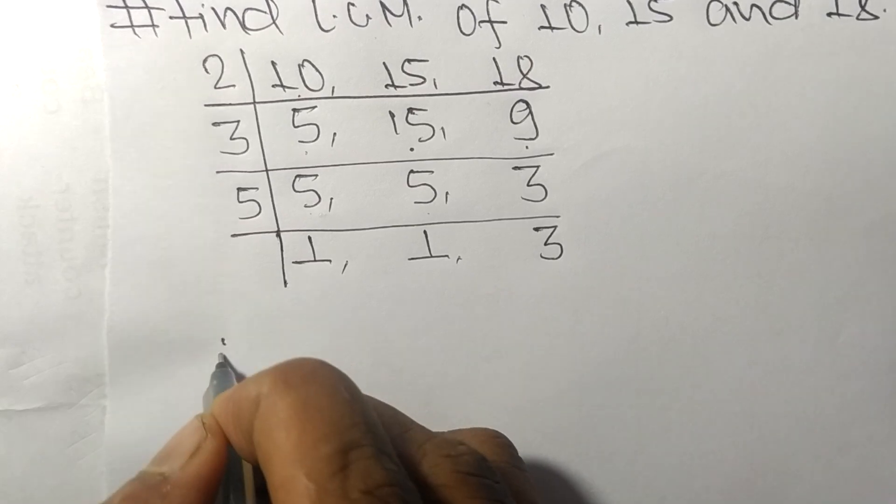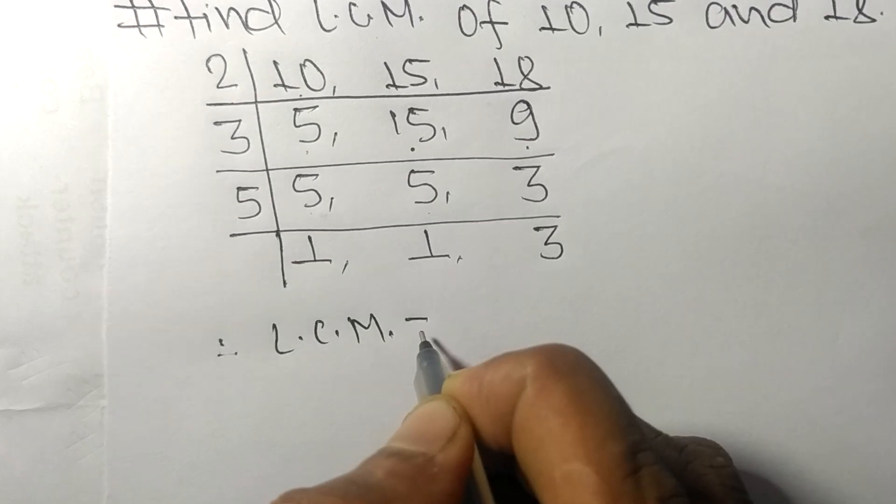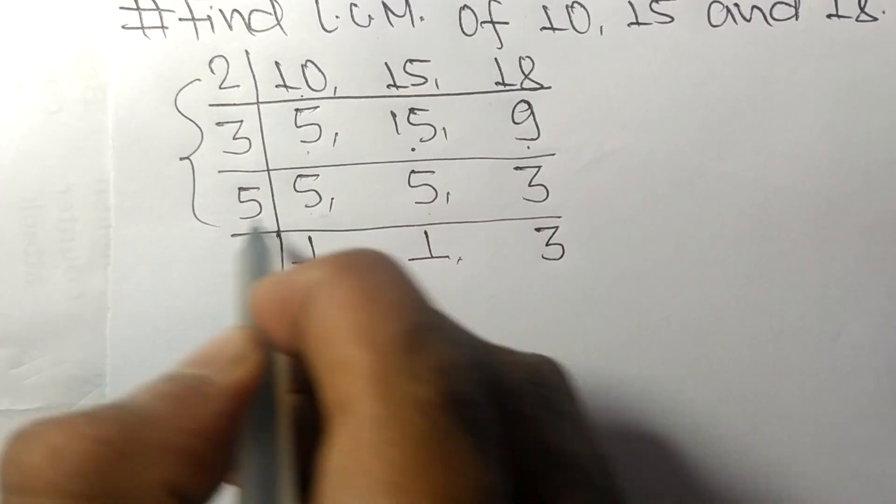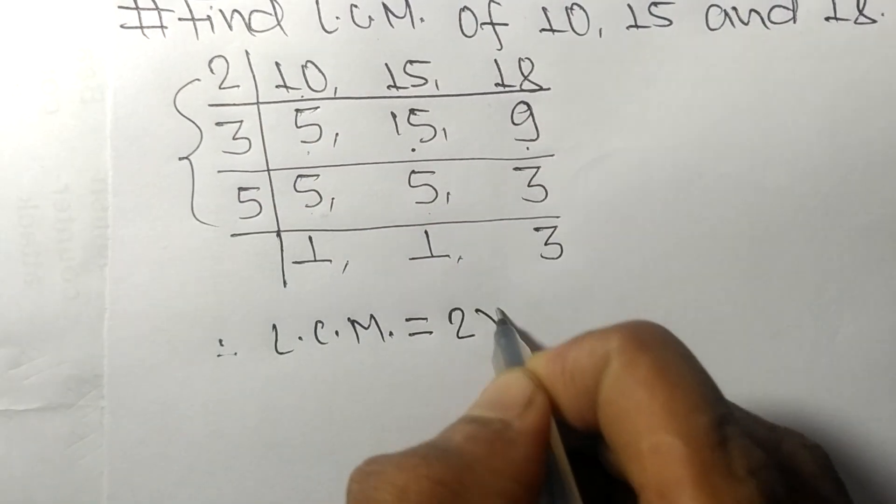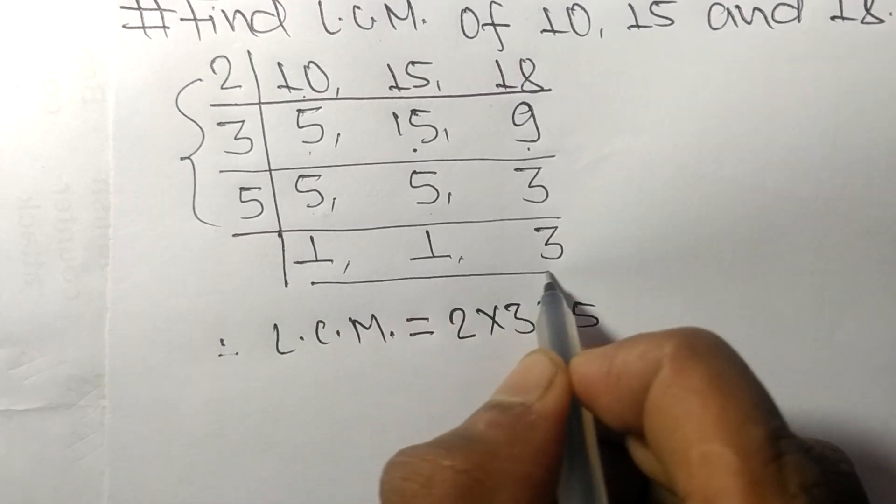Therefore its LCM is equal to, from this side it is 2, 3, and 5. From this side we choose the numbers greater than 1, that is 3.